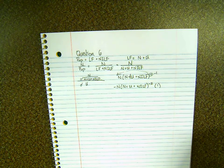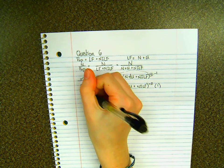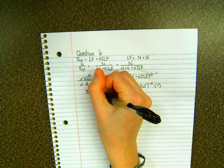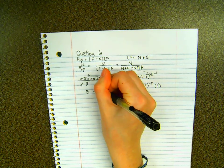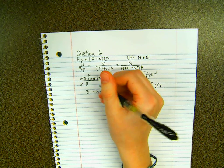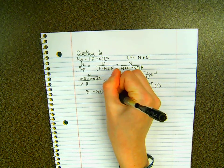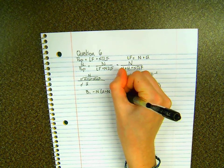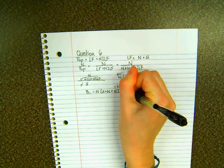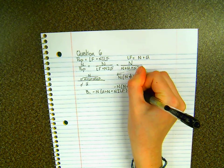So that means that our final solution is negative N times N plus U plus those not in the labor force to the negative second power.